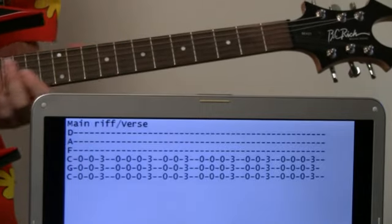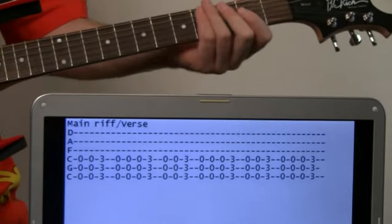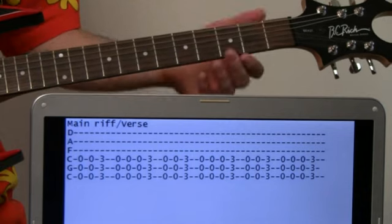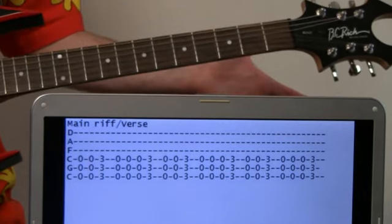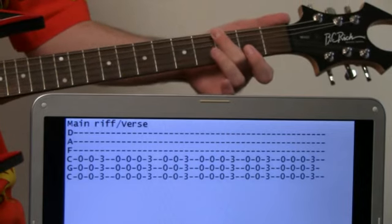Okay, and then the main riff and pretty much the verse riff come in here. It's pretty simple - it's just going to be two opens, then a third fret, three opens, and then a third fret, and then just kind of cut it and rest for a moment.